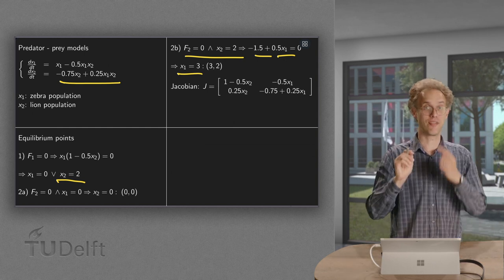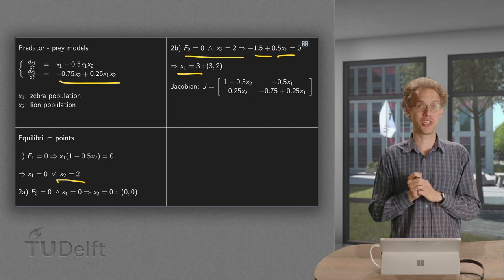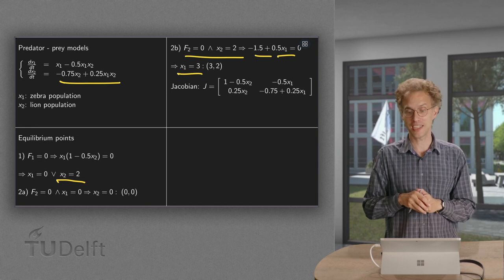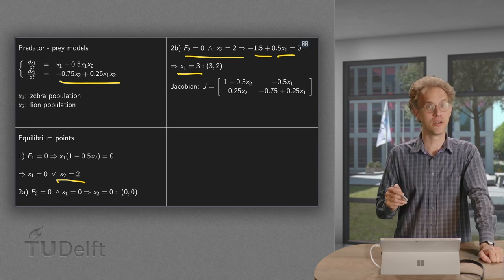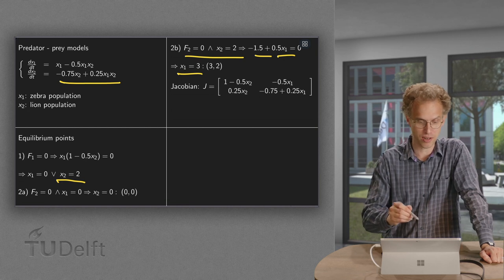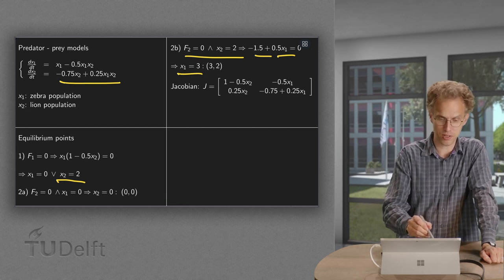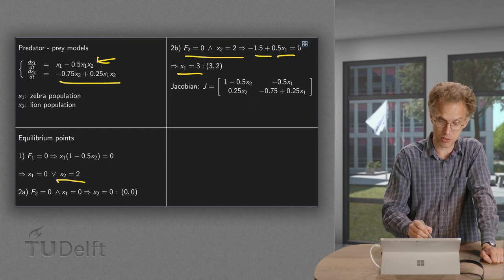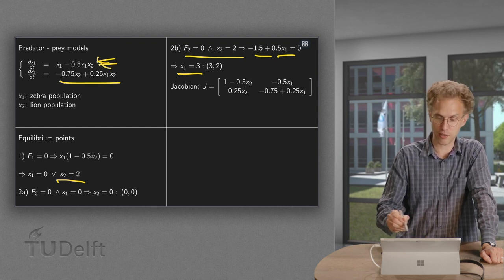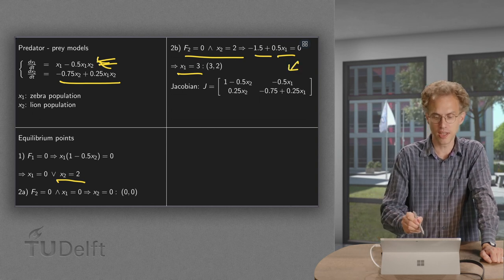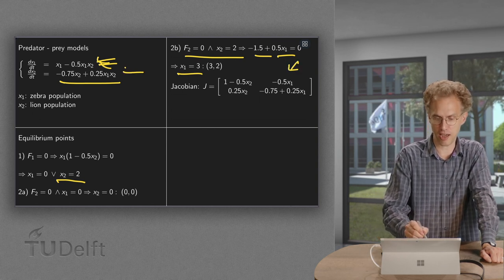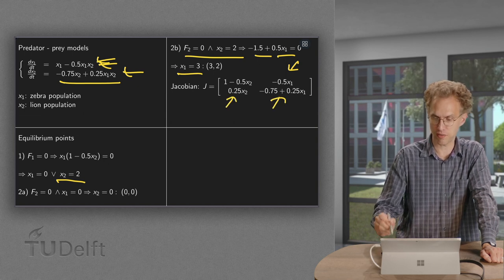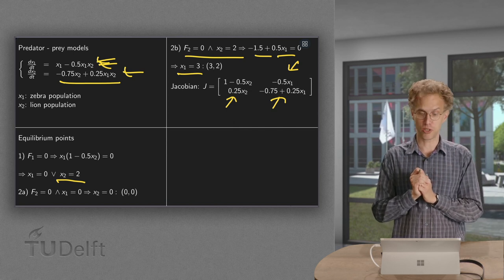So we have a second equilibrium point. But what happens to our second equilibrium point? If it's a repeller, maybe we are pushed to the origin and we go extinct anyway. Let's see. We have to look into the stability. For that we need our Jacobian. So we compute the derivative with respect to x1, which gives us 1 minus 0.5 x2. With respect to x2, which gives minus 0.5 x1. And then we do the same for our f2. So there we have our Jacobian matrix.